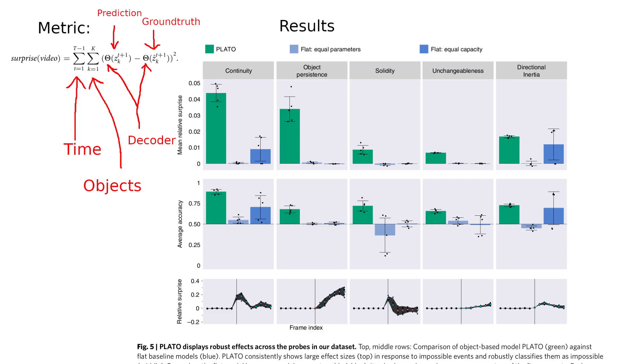As a baseline comparison, they created two other models that did not learn a representation for each object, but learned a flat representation. One of them had an equal number of parameters, but a smaller latent space, so a smaller representation for the scene.